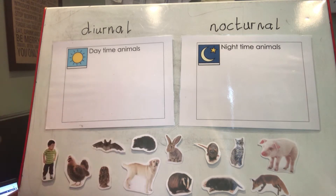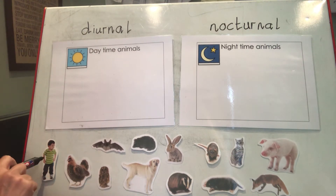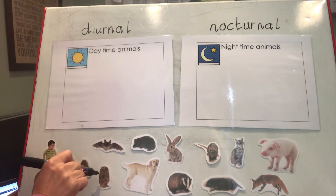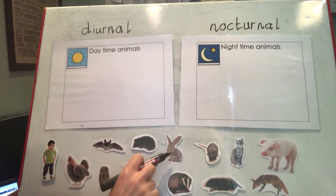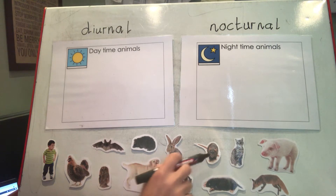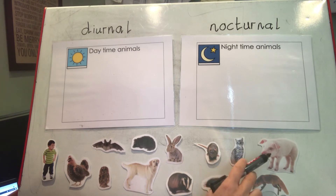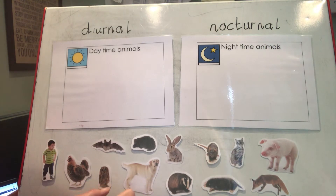First of all I need to sort my animals into nocturnal and diurnal. I've got a boy — but when we write it we'll write 'man' — I've got a hen, a bat, an owl, a hedgehog, a dog, a rabbit, a badger, a rat, a mole, a cat, a pig, and a fox.